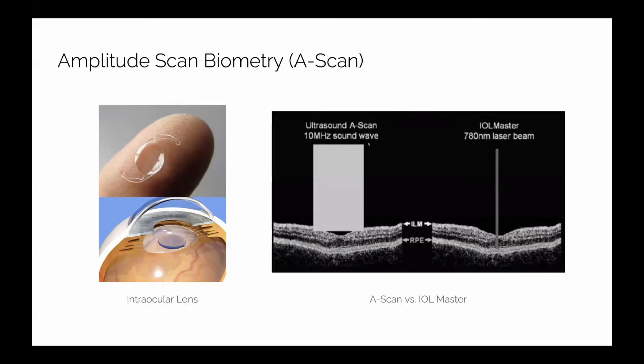But we still do use the A-scan because in people with really dense cataracts, like the picture I showed earlier, the IOL master can't penetrate that dense cataract really well. About 5% to 10% of patients who want cataract surgery will have such a dense cataract that the ophthalmologist will order an A-scan as the pre-op measurements to determine axial length instead of the IOL master. So that's the second application in a clinical setting.